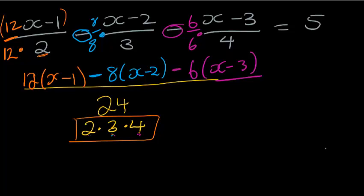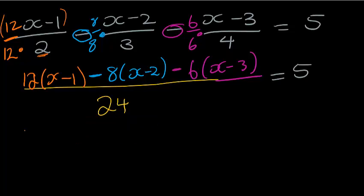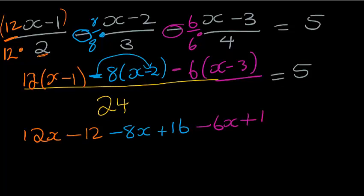And on the right hand side, equals 5. I simply bring that down. So let's simplify. Our orange one then becomes 12x minus 12. Then the blue becomes minus 8x minus times minus becomes plus. Be very careful of that. So you have to multiply that in. 8 times 2 is 16. And the purple one is minus 6x plus 18. All of that is going to be over 24. And it is equal to 5.